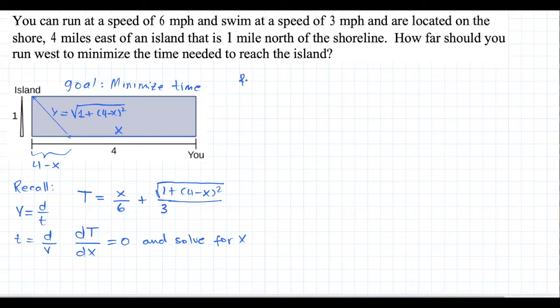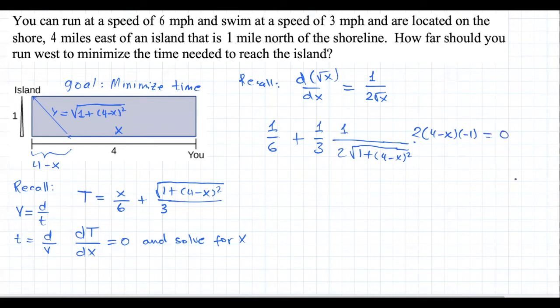For that, recall that the derivative of the square root of x function with respect to x is just, in simplified form, 1 over twice the square root of x. We're going to use that together with the chain rule here. So the derivative of this total time function should be 1 over 6 plus, let's take outside a constant one-third. Derivative of this part would be 1 over twice the square root of 1 plus 4 minus x squared times the derivative of the inside function. Derivative of this is derivative of 0. Derivative of this guy is twice 4 minus x times derivative of the inside function, so applying the chain rule again, negative 1. All that equal to 0.